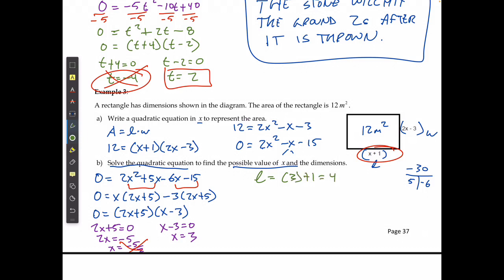I'm going to have the width which is equal to 2 times 3 minus 3 which is going to give me 3. And then I'm going to state the solution. The dimensions are 4 meters by 3 meters.